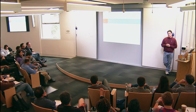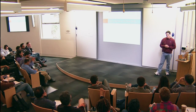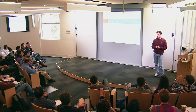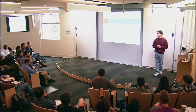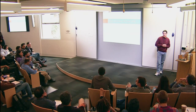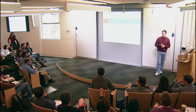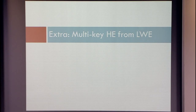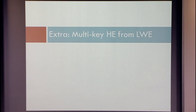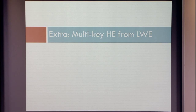So remember when I was talking about things that homomorphic encryption schemes do or do not have — one of the things it doesn't have right out of the box is the ability to compute on things that were encrypted under different keys. Let's see how to do that, and again, we want to keep everything under the LWE assumption.